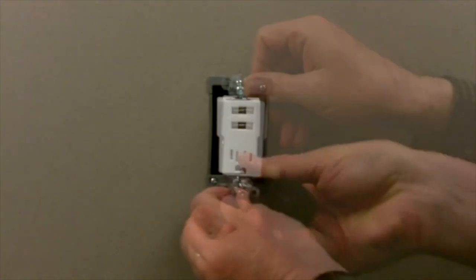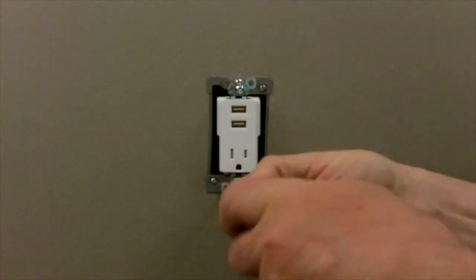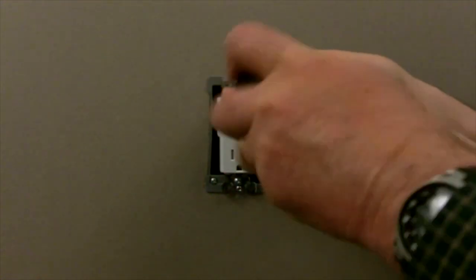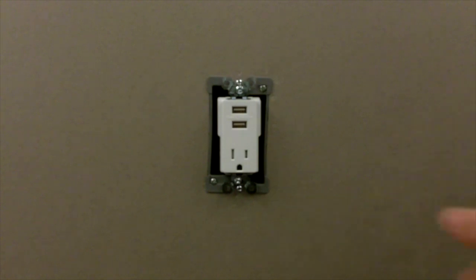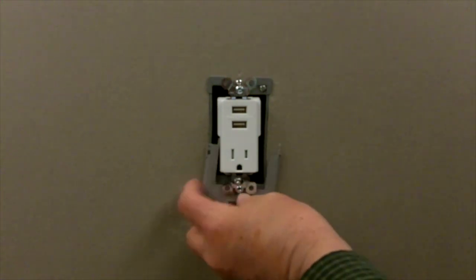Place your new combination USB charger into the wall box and secure it using the mounting screws included with the device. For ease of use, position the USB ports above the outlet.